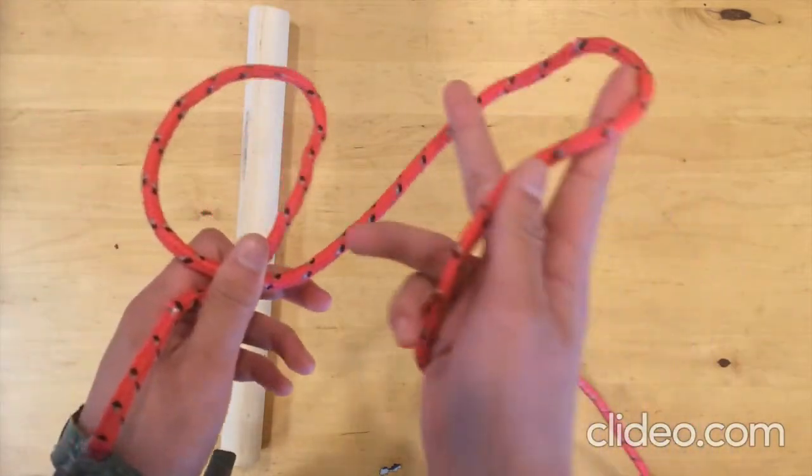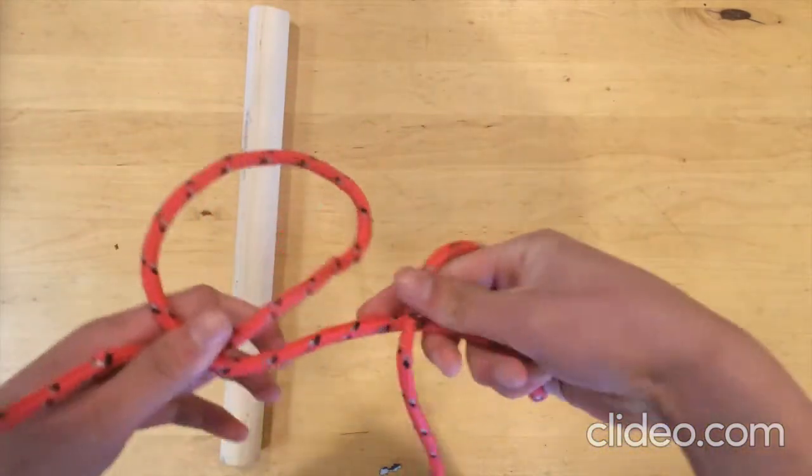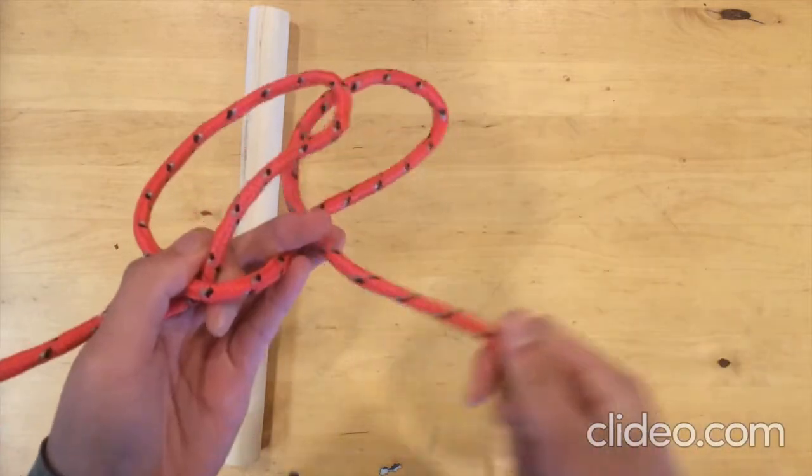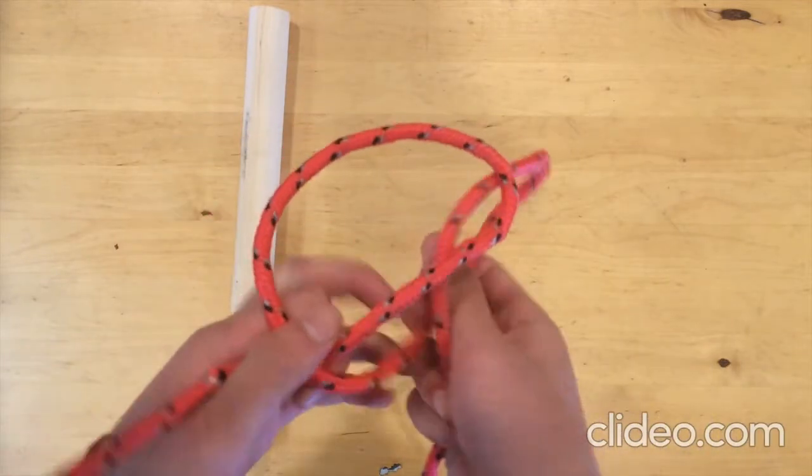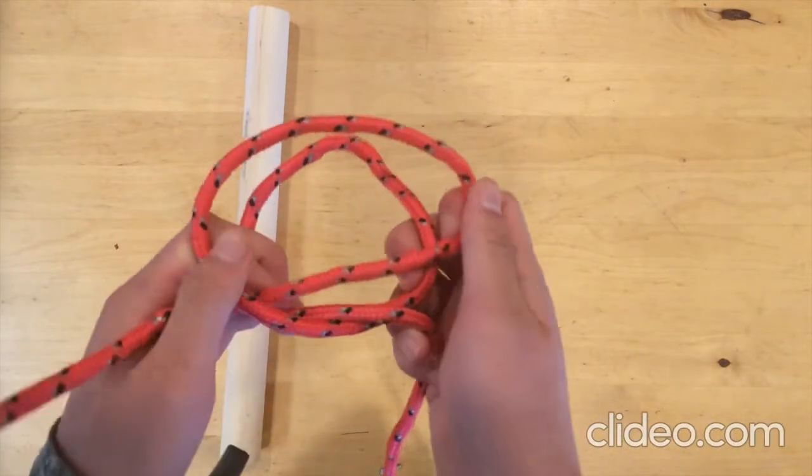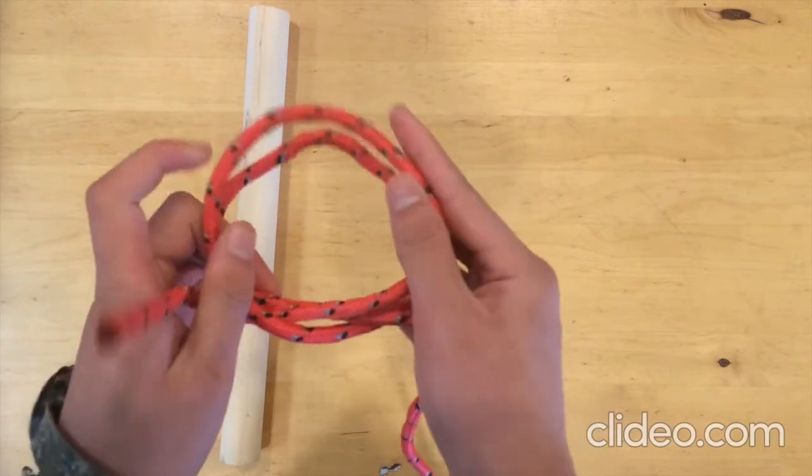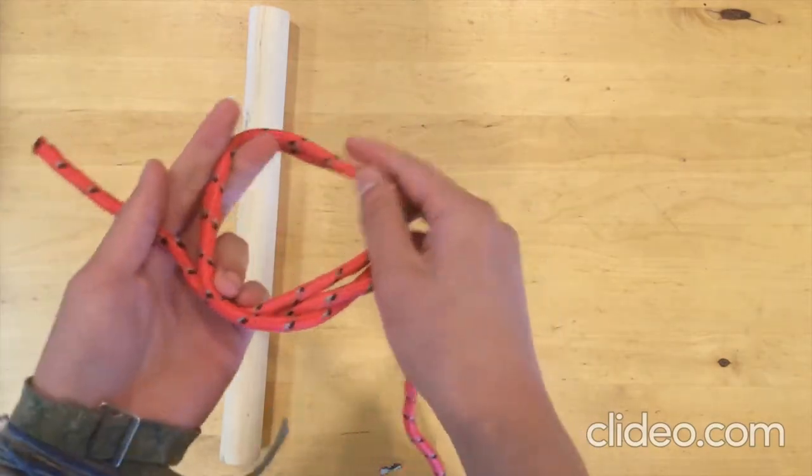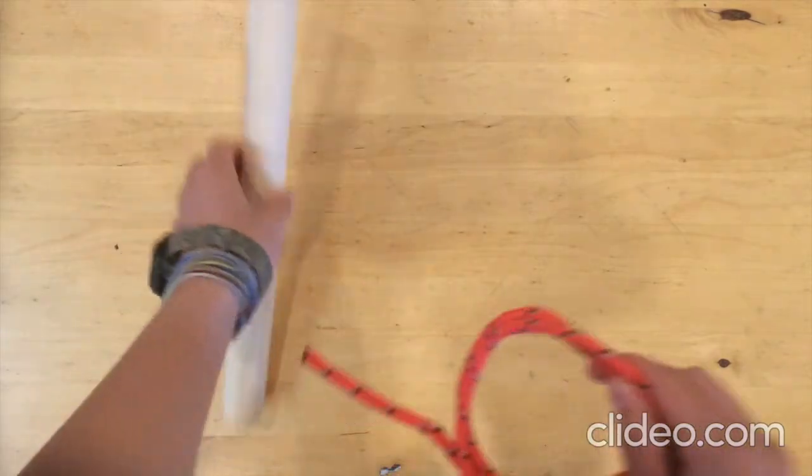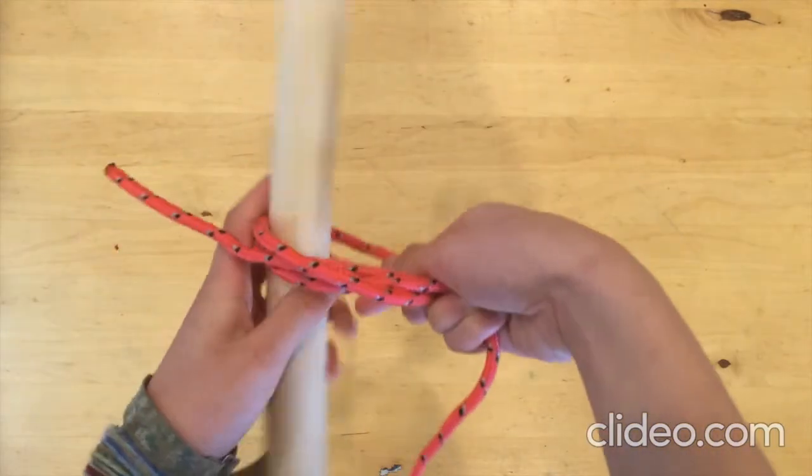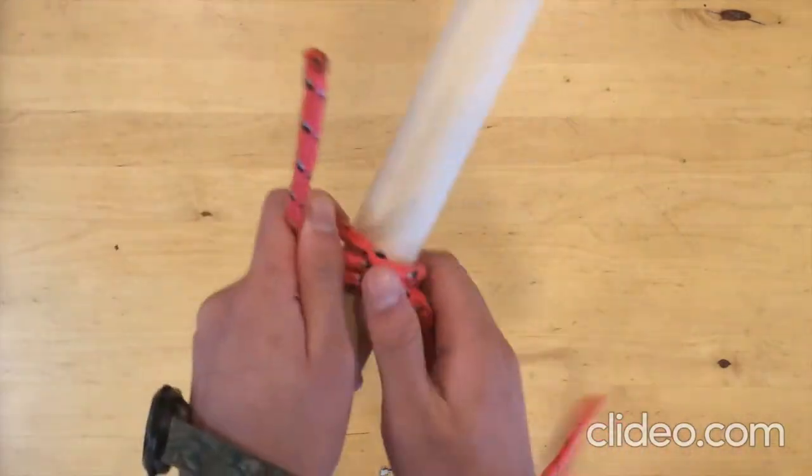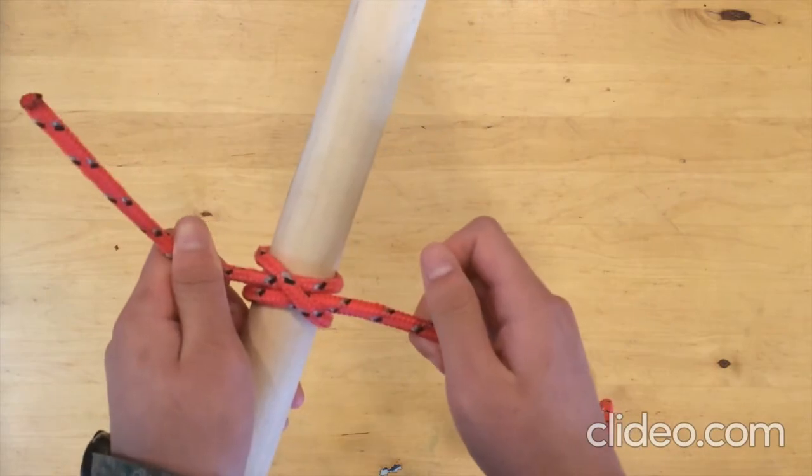You're going to keep going to this side, and you're going to form another loop. This side is still on top. See? Now you're going to take the first loop and put it over the second loop. Just like that. One on top of the other. And then you can slide it over the end of your pole, and pull it tight. Just like that.